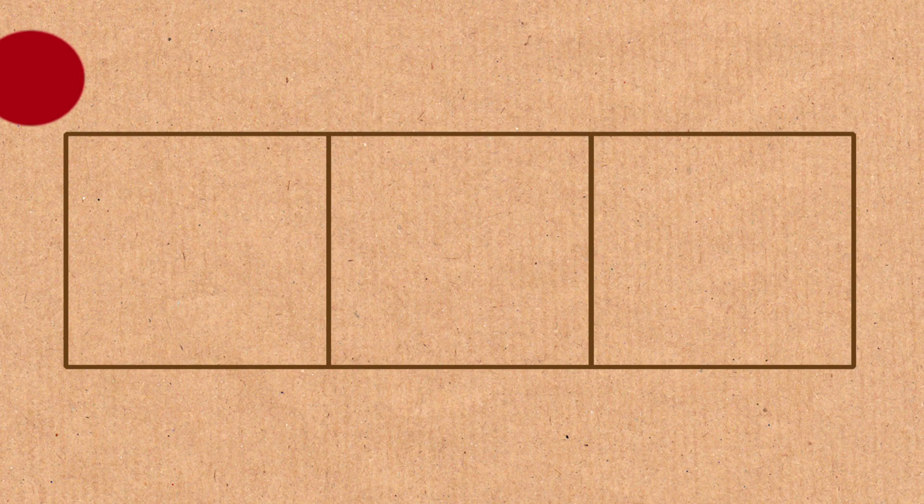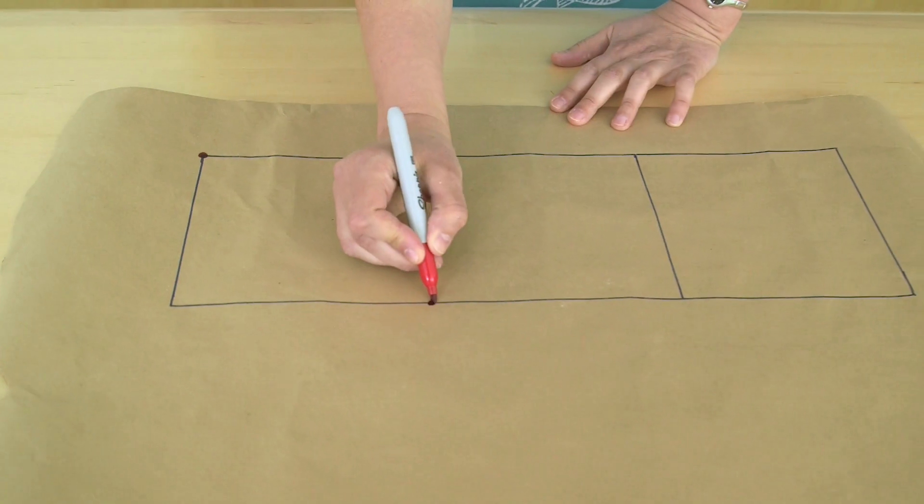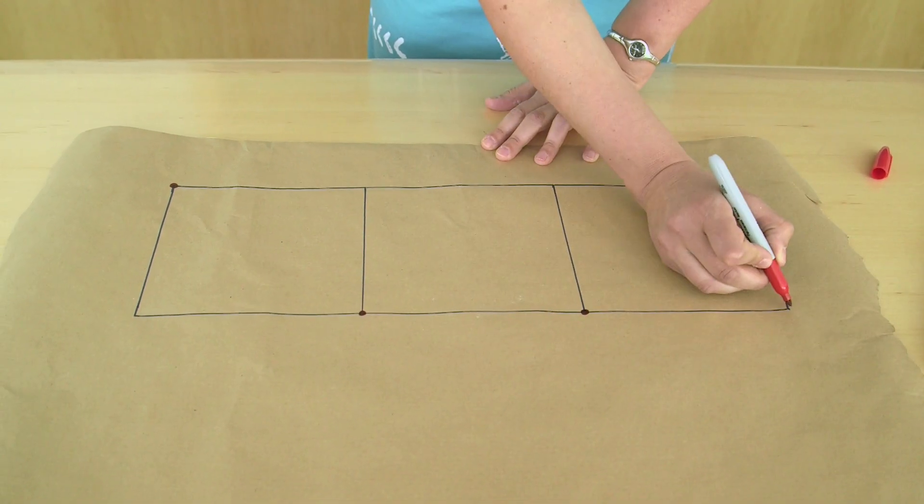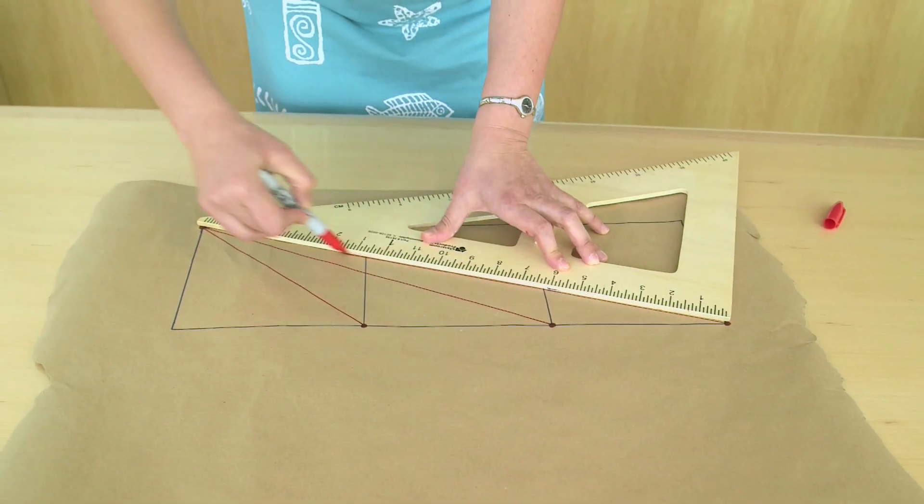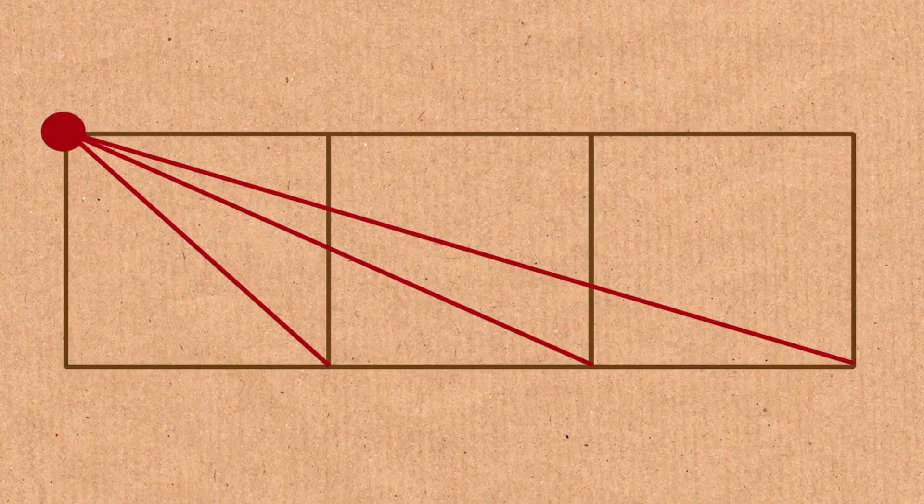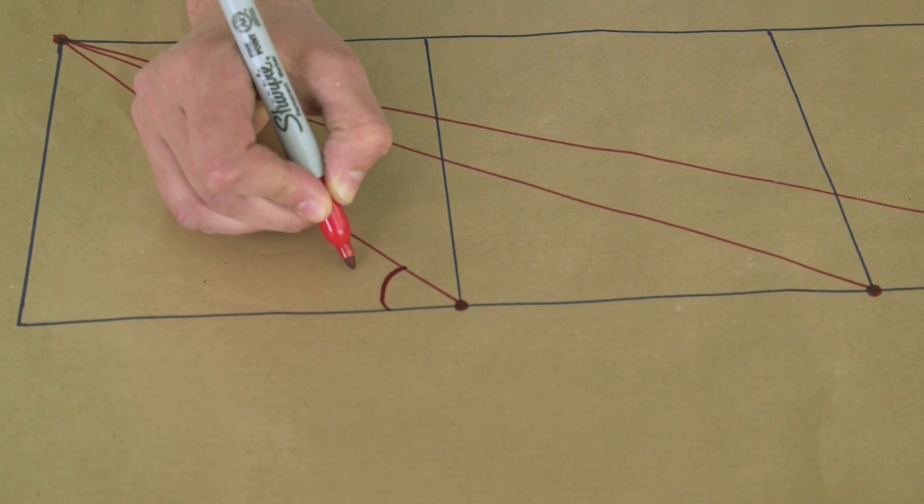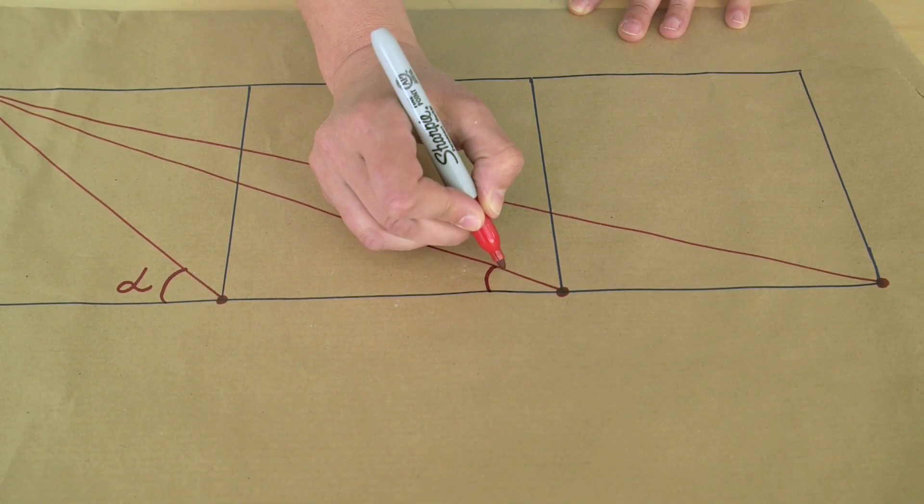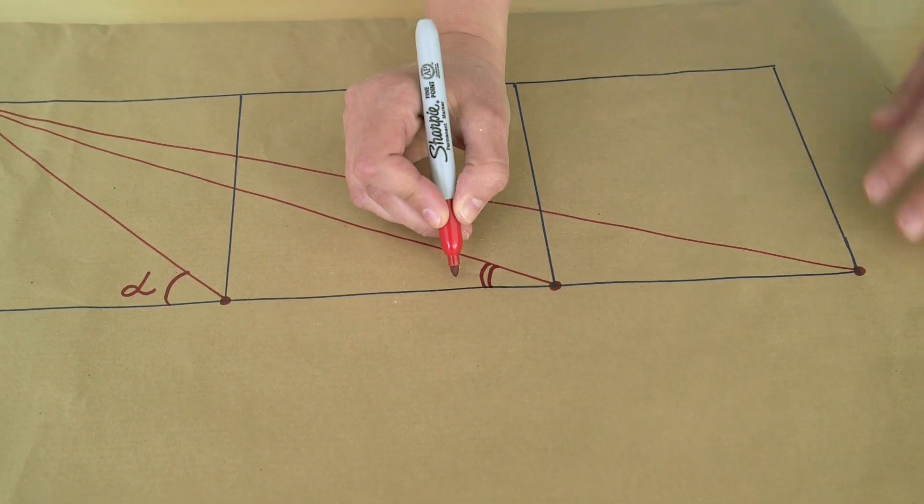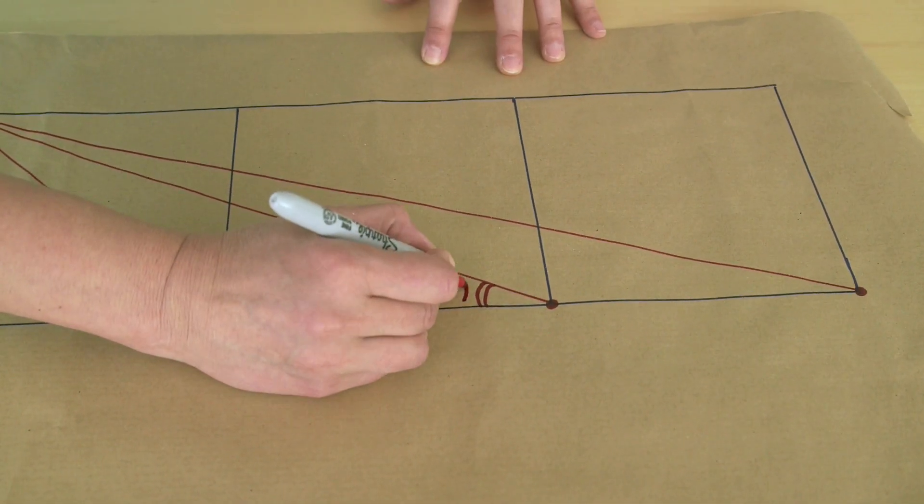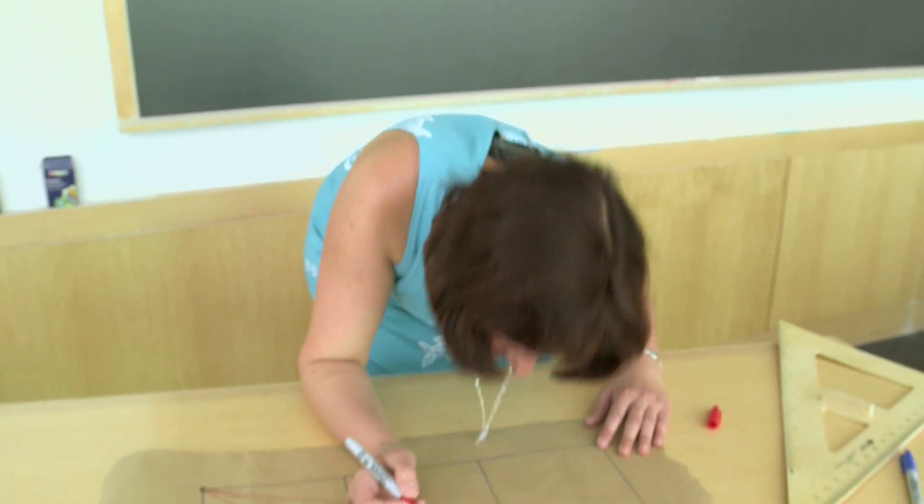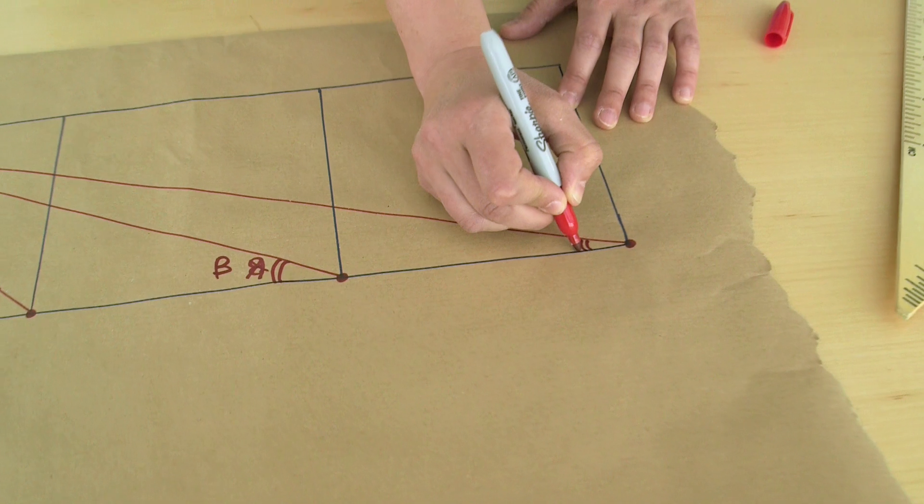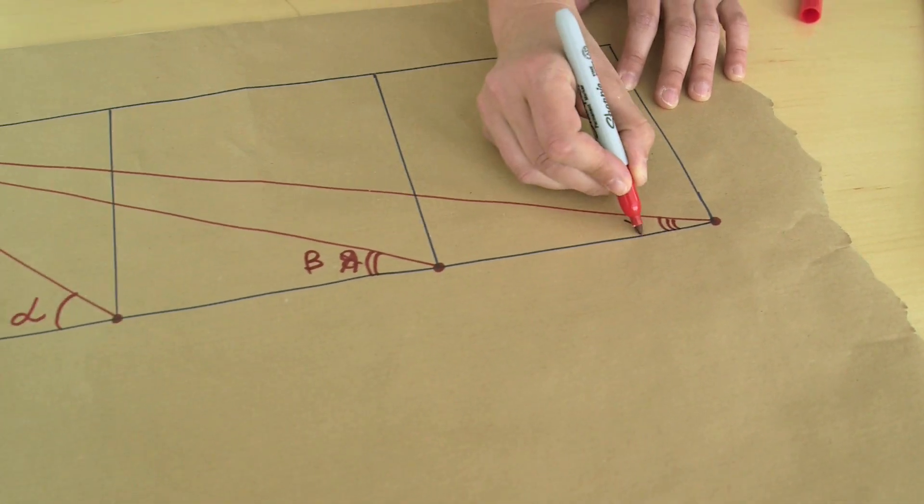So what we will do is pick one of the top corners, let's say the top left corner, and connect it to the bottom right corners of each of those three squares. Next, we will take this angle here at the bottom. Let's call it alpha. The next one at the bottom, let's call it beta. And finally, gamma.